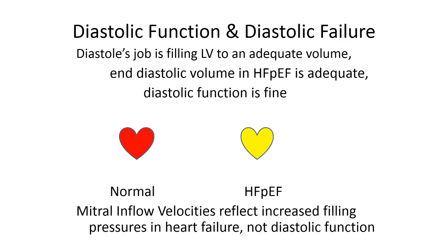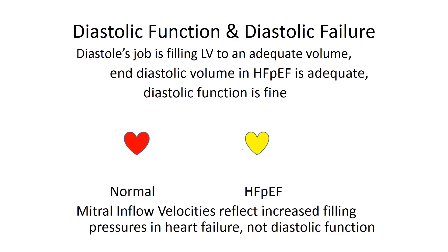We keep on blaming diastolic function. But in diastole, the heart has very little to do apart from filling adequately to a volume more than the stroke volume. If the end-diastolic volume in heart failure with preserved ejection fraction is adequate — and it invariably is — then diastole is not causing the problem. The diastolic function is simply to fill the heart to an adequate volume. Whatever we measure in tissue Doppler signals and so on, these are related to high filling pressures — they are not really diastolic dysfunction.